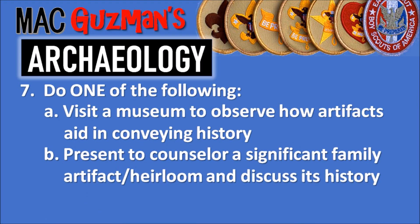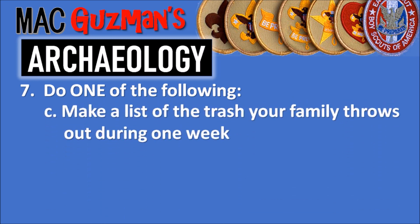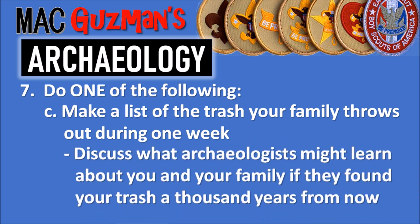7b says to present to your counselor a significant family artifact or heirloom and discuss its history. If you don't like those options, 7c is a pretty interesting one — it says to make a list of the trash your family throws out during one week and discuss what archaeologists might learn about you and your family if they found your trash a thousand years from now, which is pretty interesting based on how your lifestyle would appear just from looking at your trash.